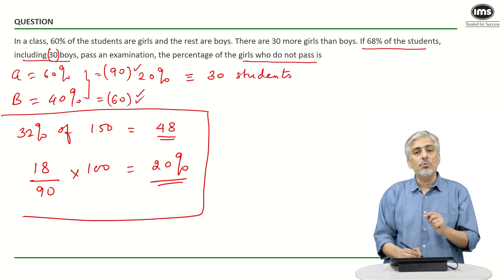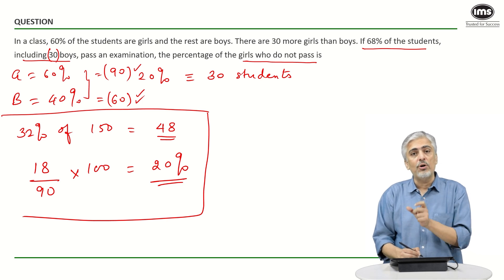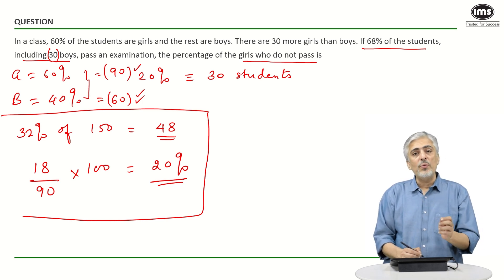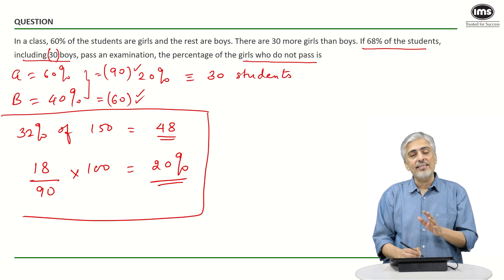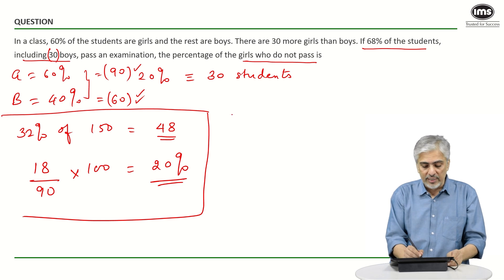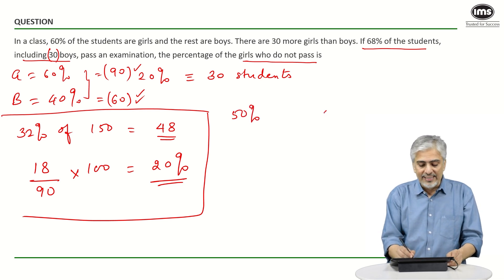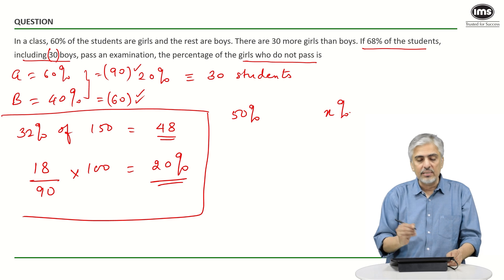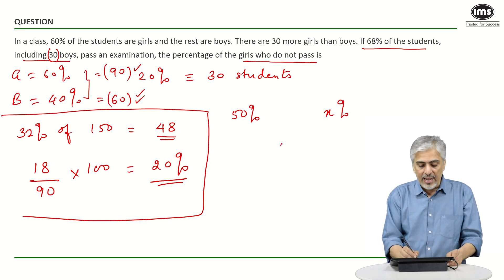Because they told us 30 boys passed. So how many boys did not pass in terms of percentage? 50% did not pass—30 out of 60. Let's say x percent of the girls did not pass, and the average percentage for the whole class is 32%.